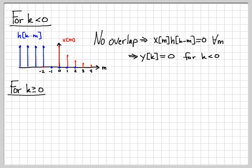So the next case I need to consider is k greater than or equal to 0. So I'll go ahead and sketch x[m] again. And then when I sketch h[k-m], I'm now considering for values where k is greater than or equal to 0. So now h[k-m] is kind of slid into the portion of time where x is actually on. So now there is some overlap.